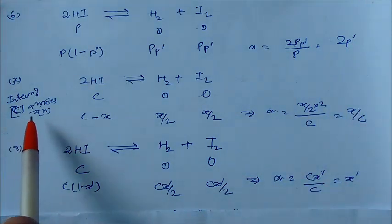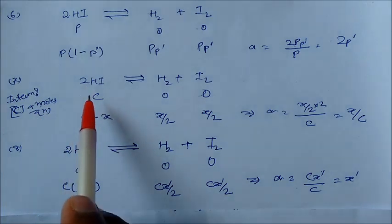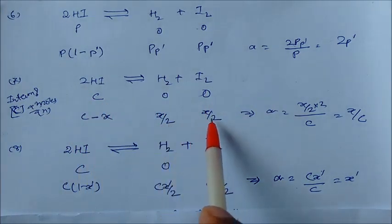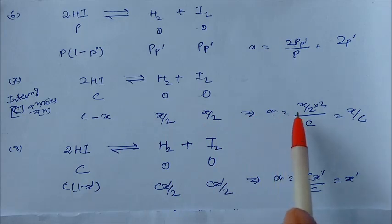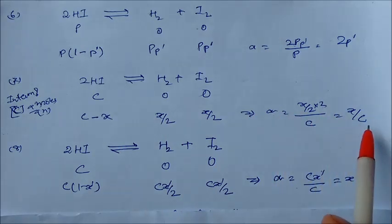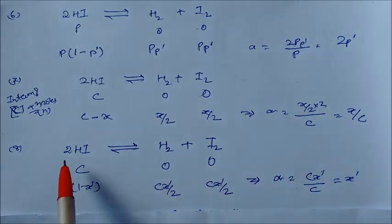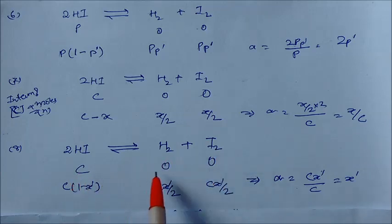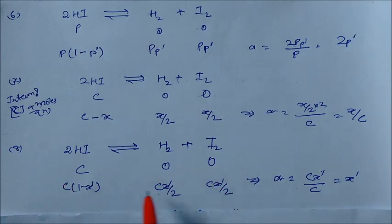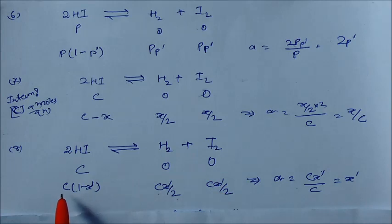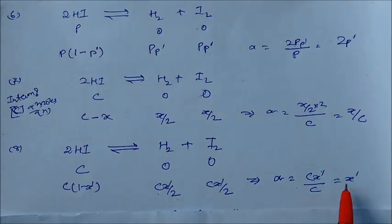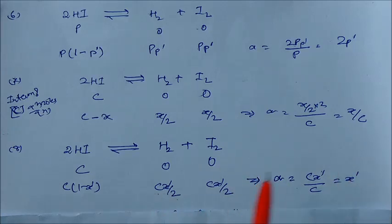We can also write degree of dissociation in terms of concentration c. For 2HI ⇌ H₂ + I₂ with initial concentration c, at equilibrium H₂ = c·(x/2), I₂ = c·(x/2), and 2HI = c·(1 minus x). So alpha = c·x / c = x. Different ways of expressing moles give different intermediate results but the same final alpha.